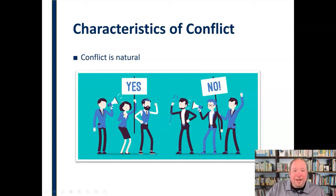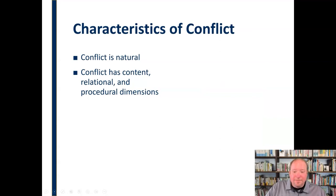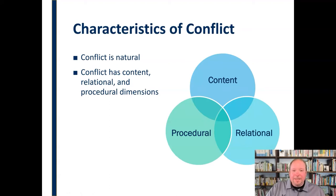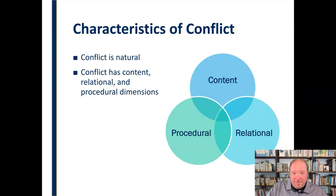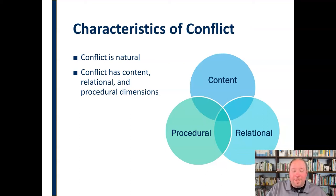It's a matter of when, and then how do you manage that conflict — how do you go about engaging it? Which brings us to our next point. Conflict has content, relational, and procedural dimensions, and these all play off of and into one another. Conflict has a content dimension, meaning there's what the conflict is actually about. Are you upset because somebody left the milk out? Are you upset because somebody took your car and didn't ask you, or is late all the time? You're in conflict over whatever the conflict is about — that's the content dimension.